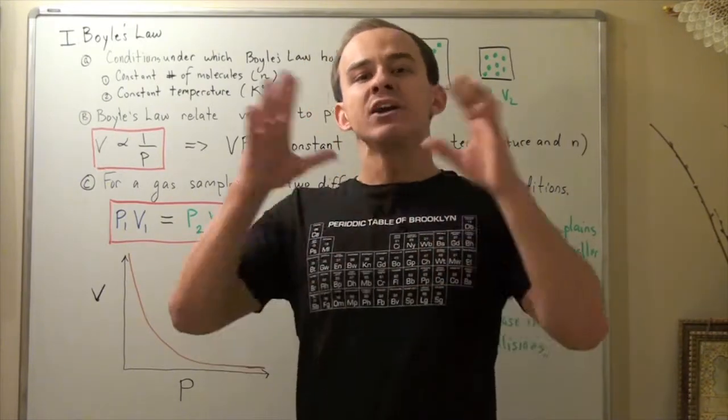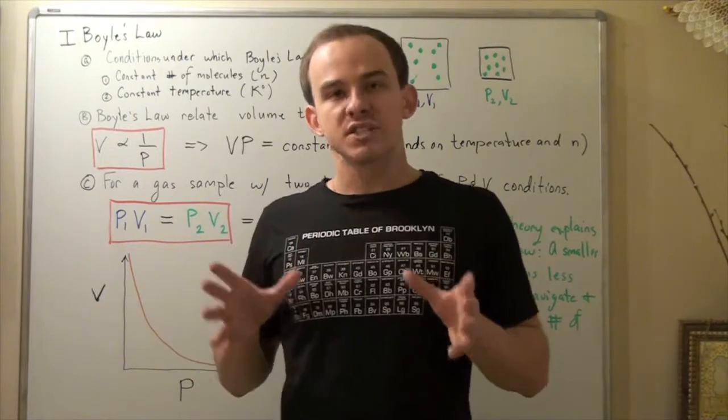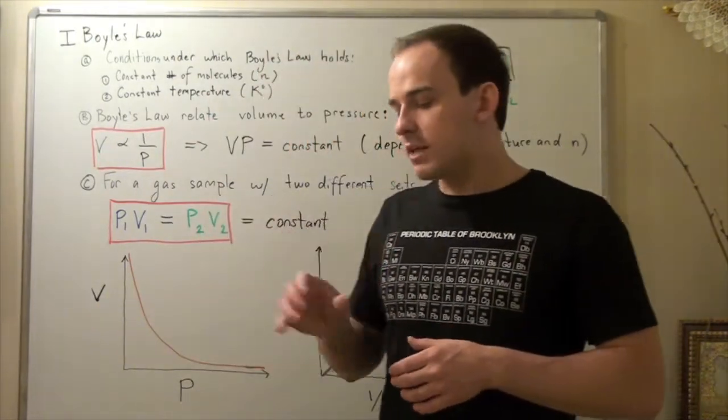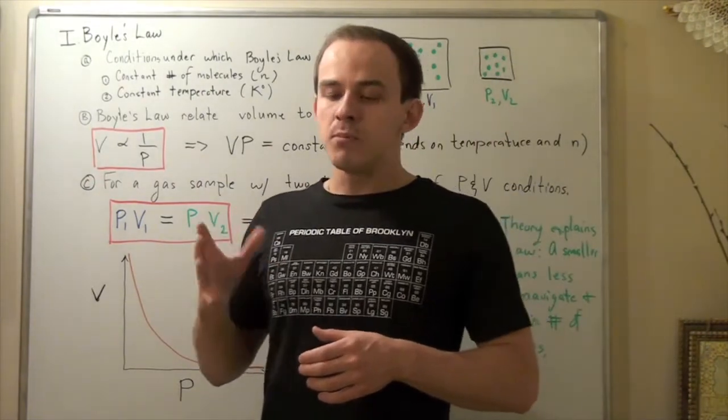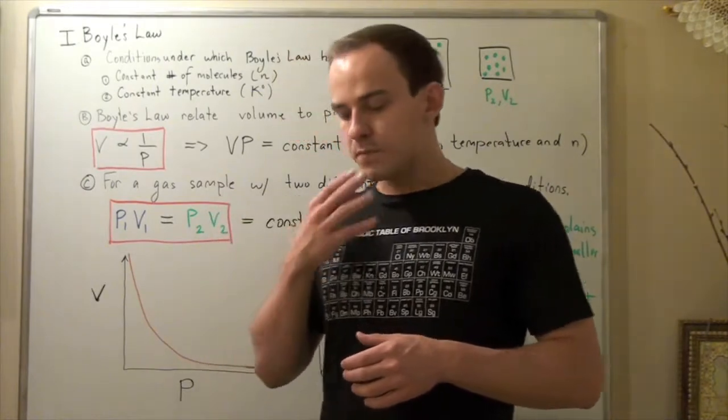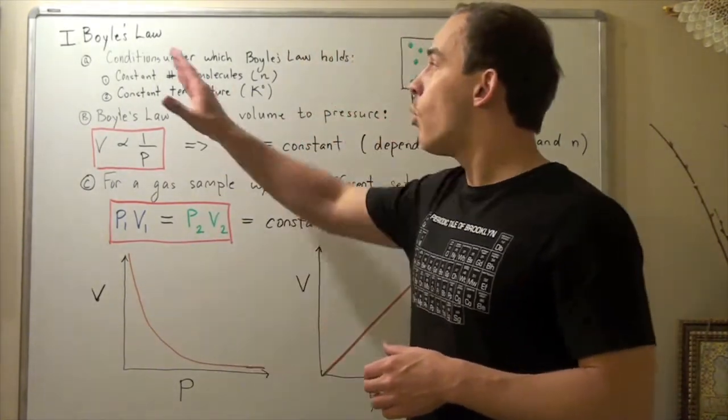Now in order to look at the macroscopic level, or explain gas behavior on a macroscopic level, a much larger level, we have to look at something else. Scientists came up with different equations and formulas to explain macroscopic gas behavior. The first formula we're going to look at and discuss is called Boyle's Law.